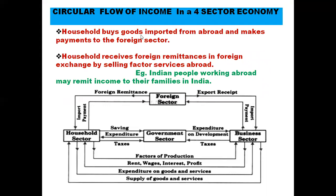Now moving to the foreign sector: households buy goods imported from abroad and make payments to the foreign sector. When houses import goods from the foreign sector, they pay for them. Here only the money flow is shown - the real flow is not shown for simplicity. So from households, import payment flows to the foreign sector.